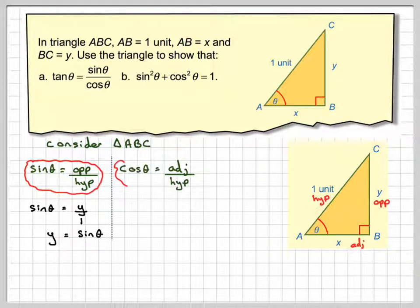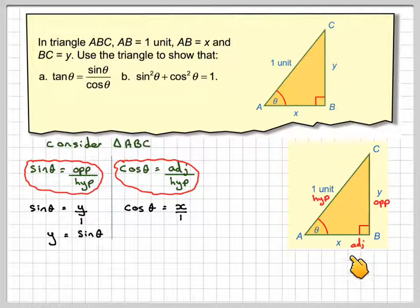Cos θ is adjacent over hypotenuse. So cos θ will be adjacent over hypotenuse, so it's x over 1, therefore x must be equal to cos θ.